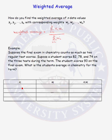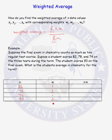The test scores for this student are our data values: 82, 78, 74, and on the final exam the student scored 93. The final exam counts as much as two regular tests, so if we give weight 1 to the regular tests, then the final exam is worth 2. Multiplying each data value by its corresponding weight, we have 82 times 1 is 82, 78, 74, and 93 times 2 is 186.